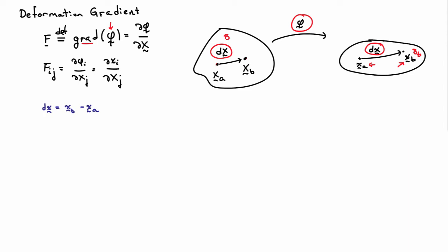First let me write out d little x. That's just simply the difference between little xB and little xA. I can write little xB as big XB plus the displacement vector U evaluated at XB, and then I can write minus little xA as minus big XA plus U evaluated at big XA. So U is just simply the displacement.